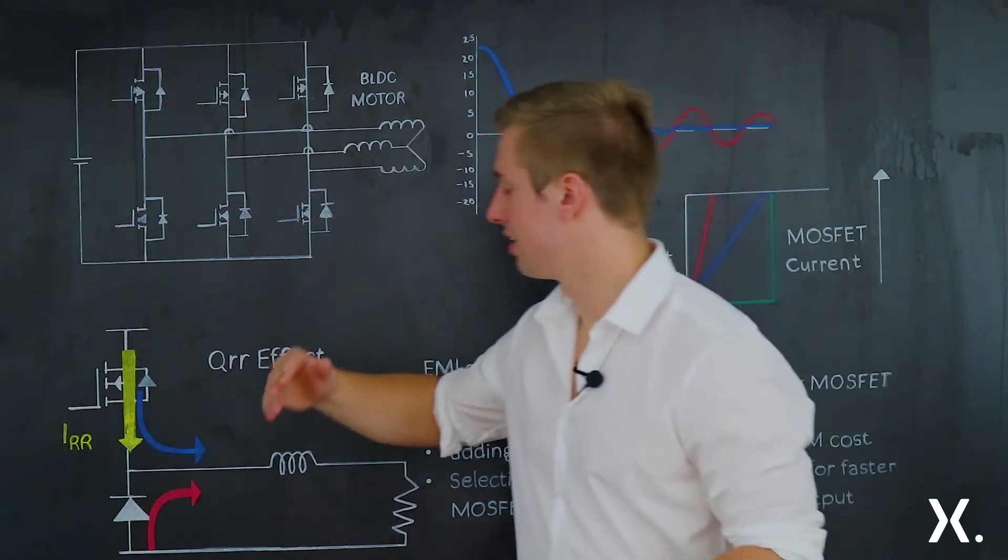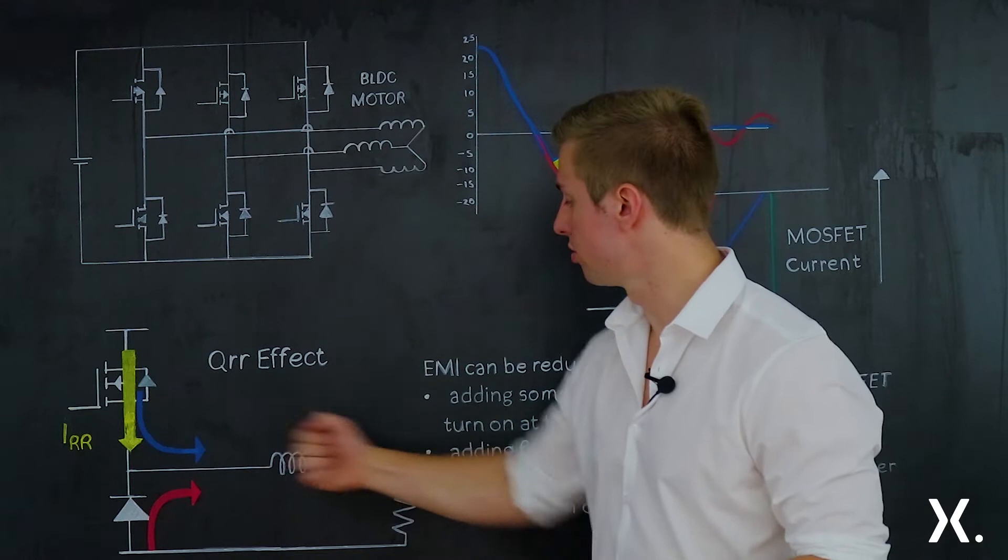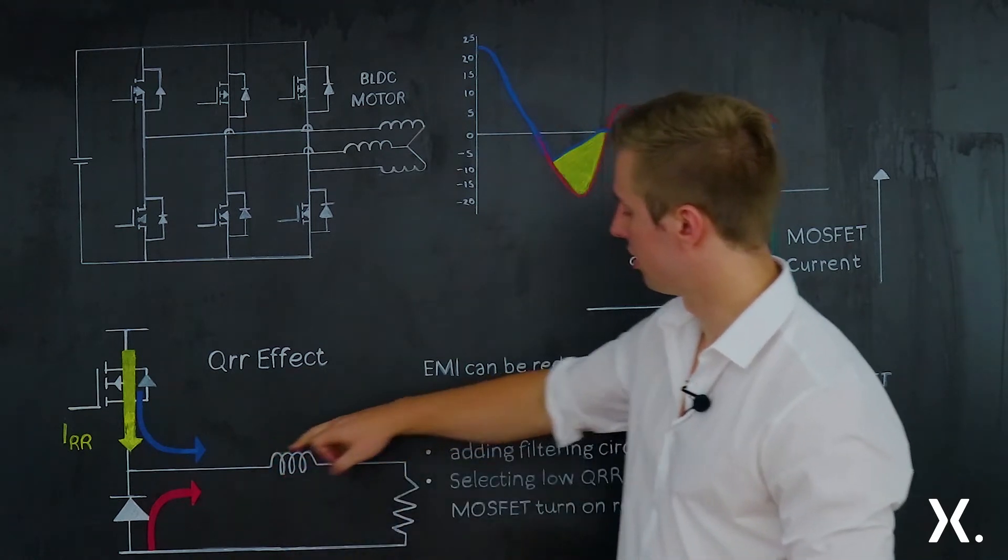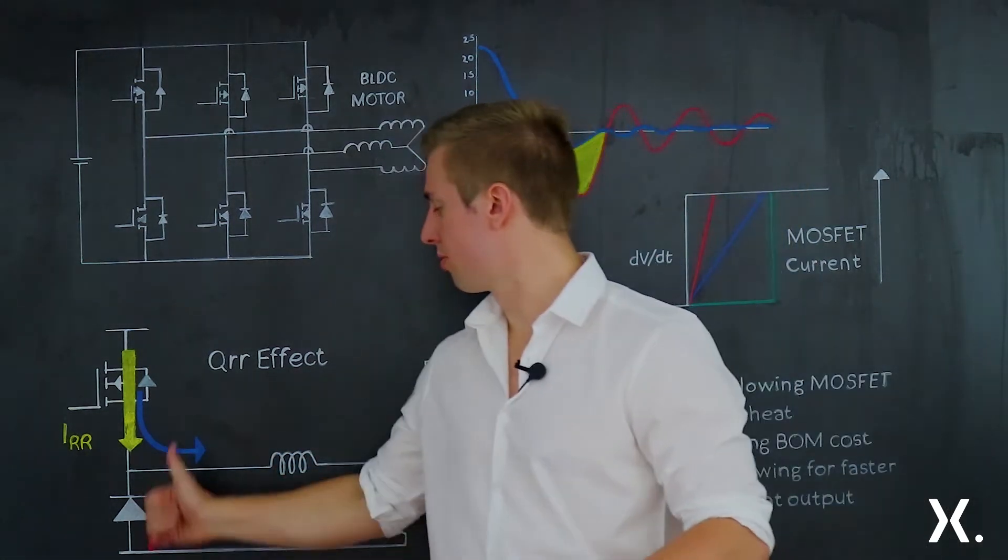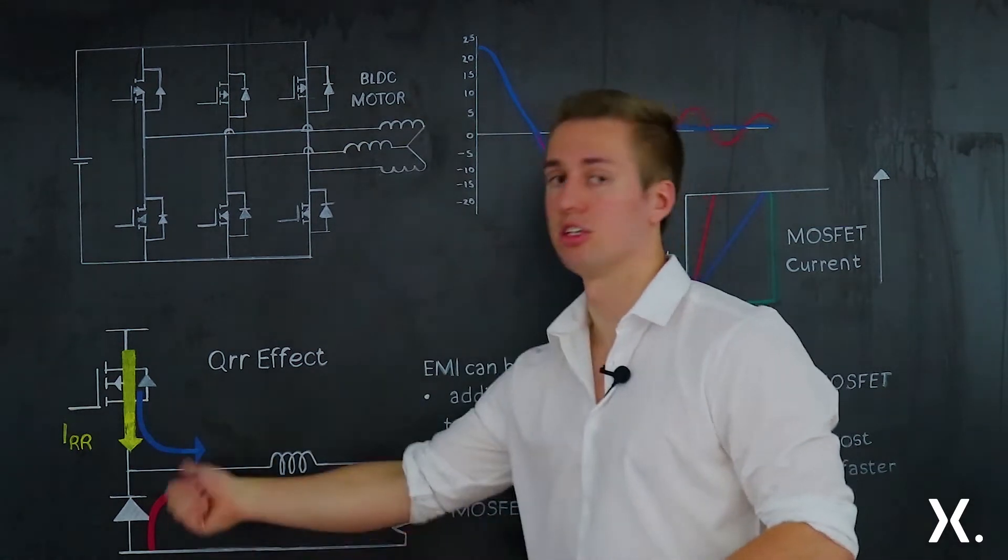When the high side then turns off the current will still want to push that same current through, which it will. It will push it down through the resistor, up through the diode and suck it back through the circuit.